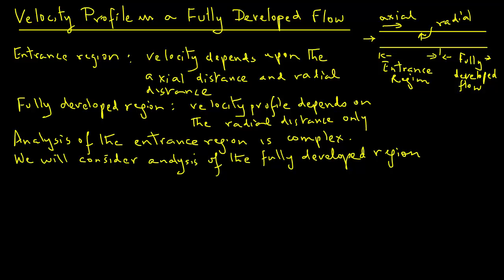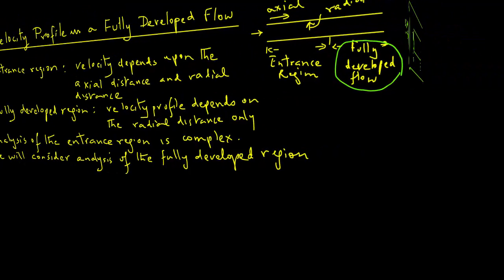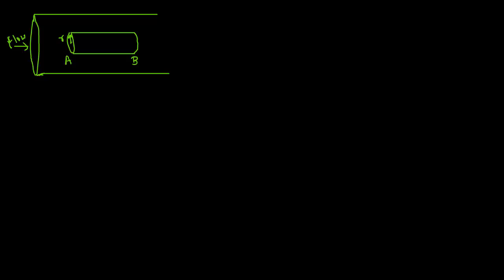Previously in the module, we mentioned that it is a parabolic velocity profile, and in this mathematical development we will determine the actual geometrical shape of that profile. So, let's draw a small section of a pipe. Inside this pipe, we take a cylindrical region of the fluid with a small radius r, and we have the length of this imaginary cylindrical volume of fluid as A to B.